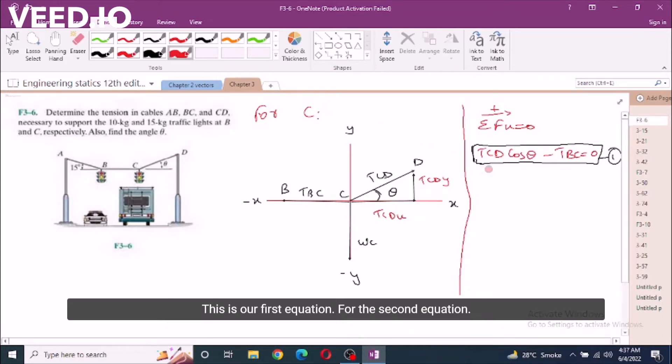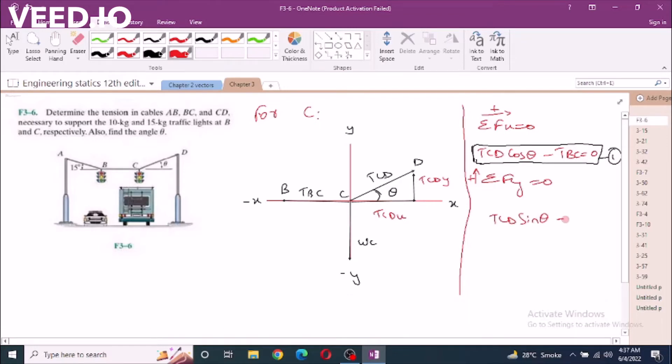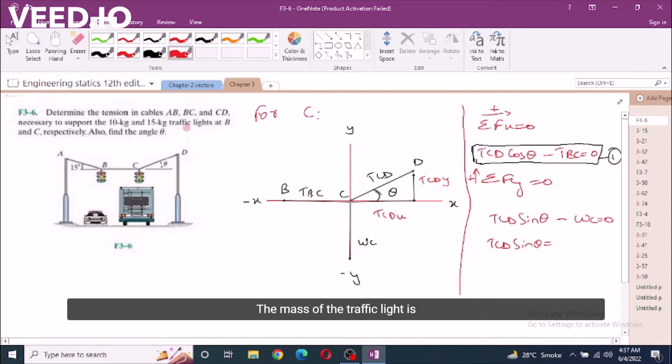For second equation, sum of forces in y equals zero. We are taking up direction positive. So I have TCD sin theta minus WC equals zero. TCD sin theta equals the mass of the traffic light which is 15 kg into 9.81, equals 147.15. Now this is the second equation, equation 2.